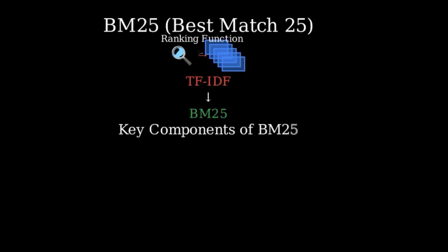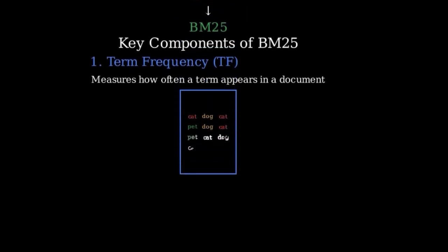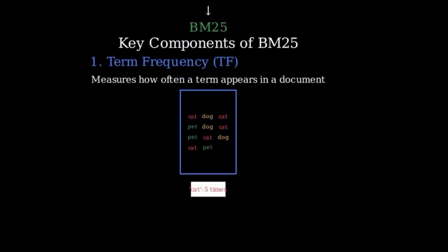Let's understand the key components of BM25. First, we have Term Frequency, abbreviated as TF. This measures how often a term appears in a document. The more frequently a term appears, the more relevant the document is considered to be.